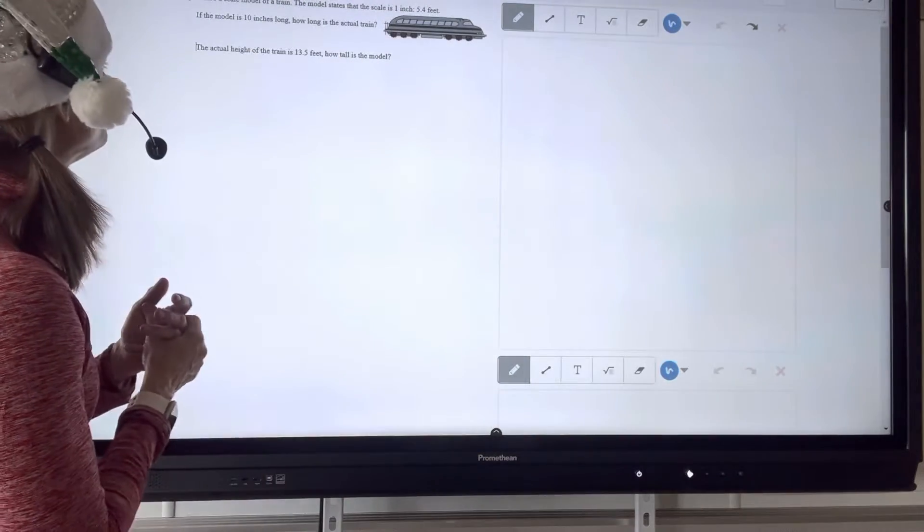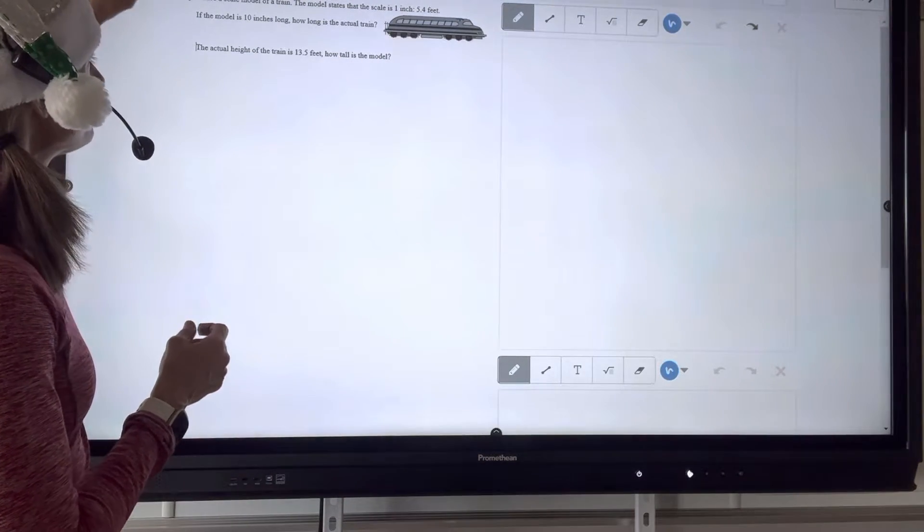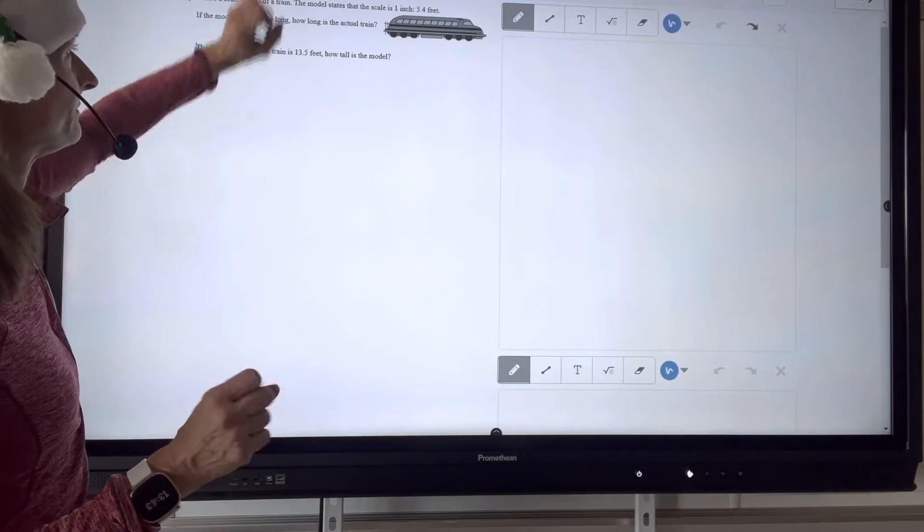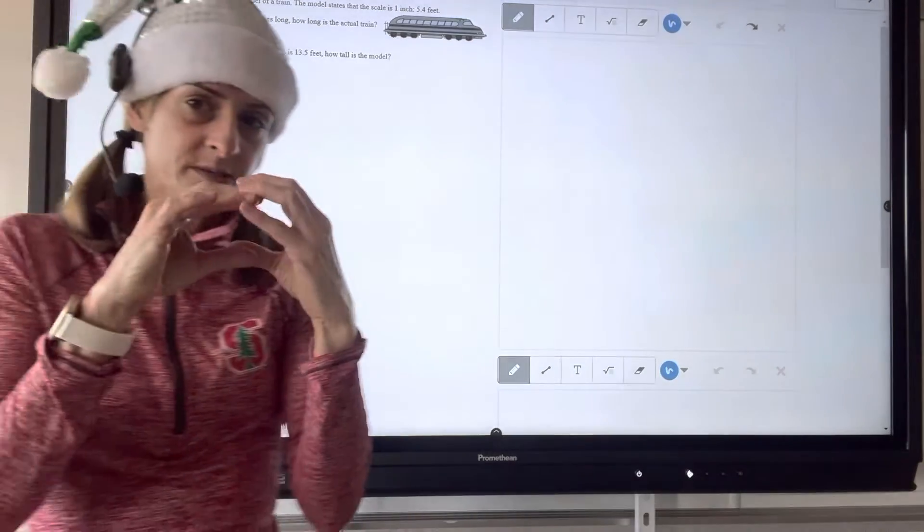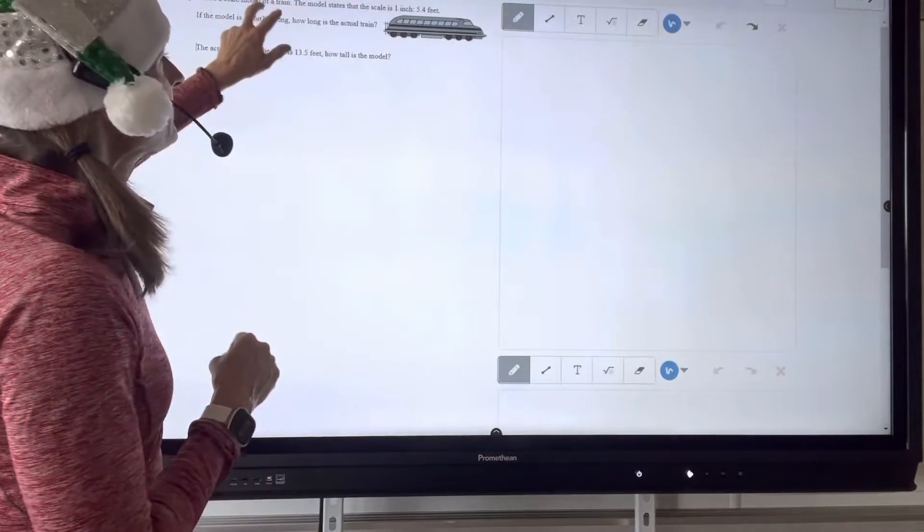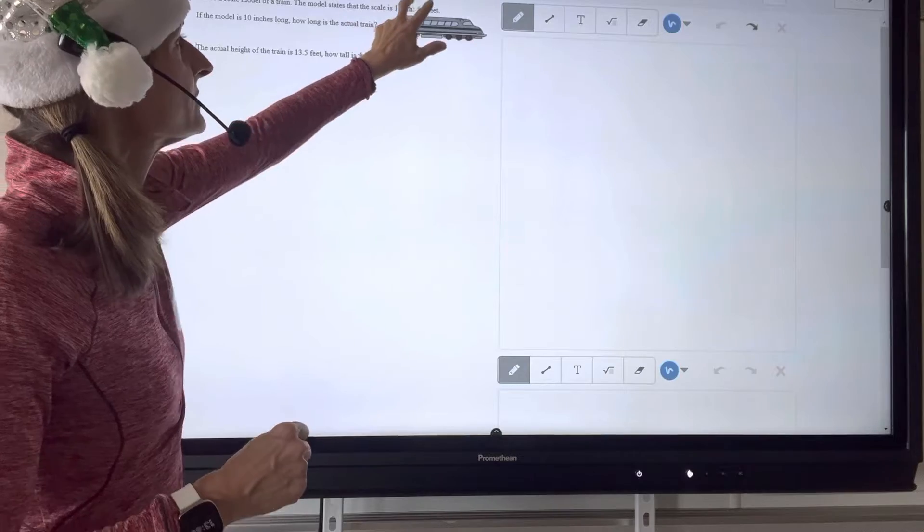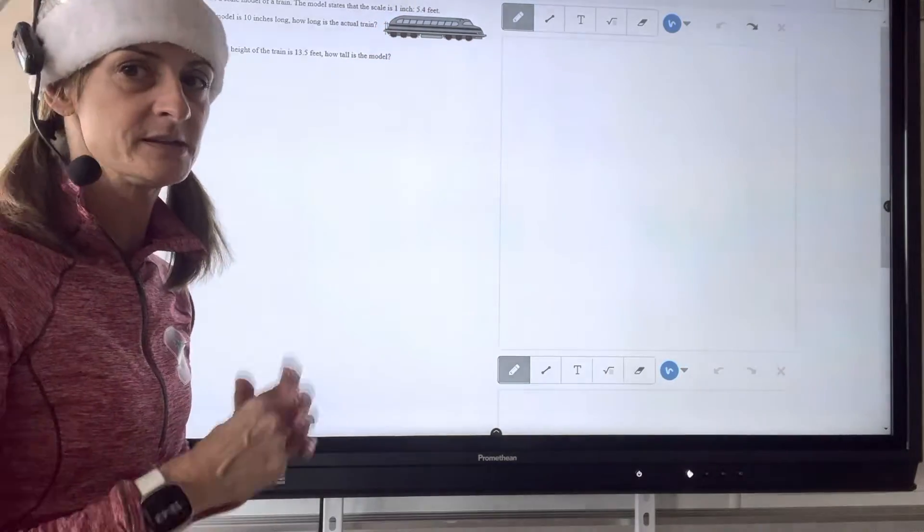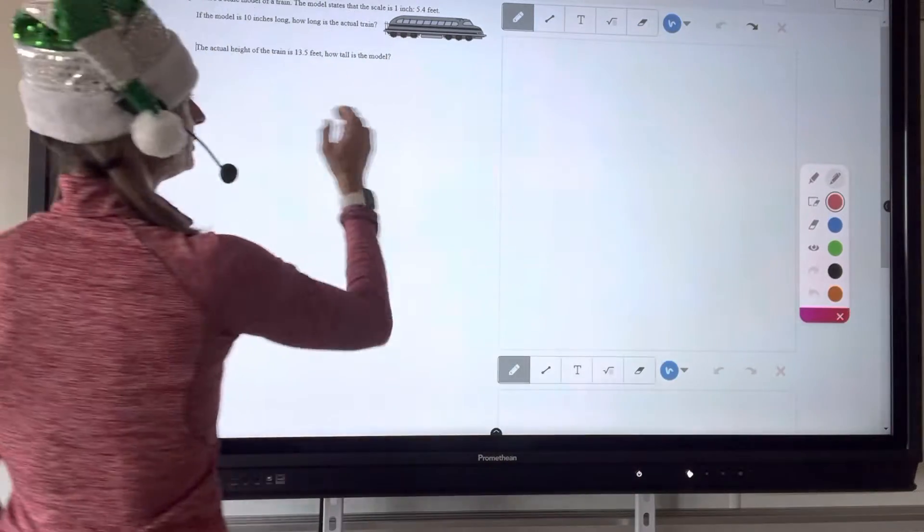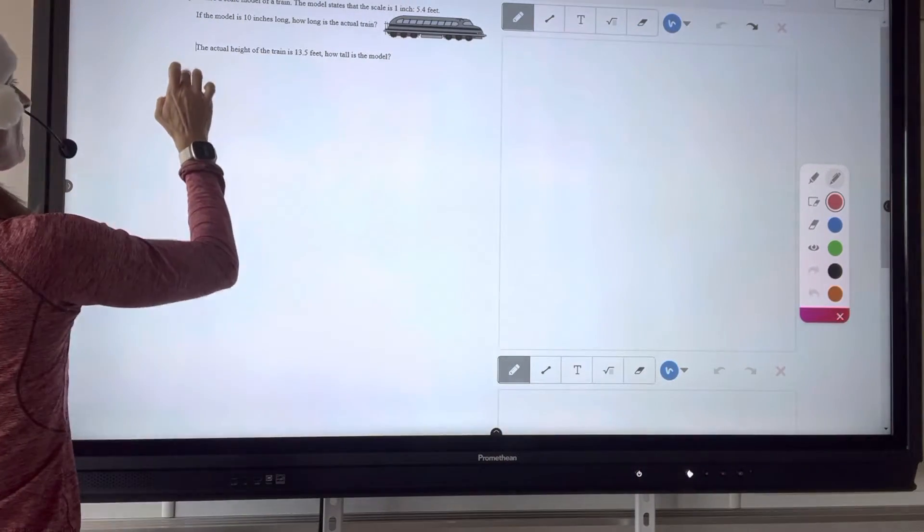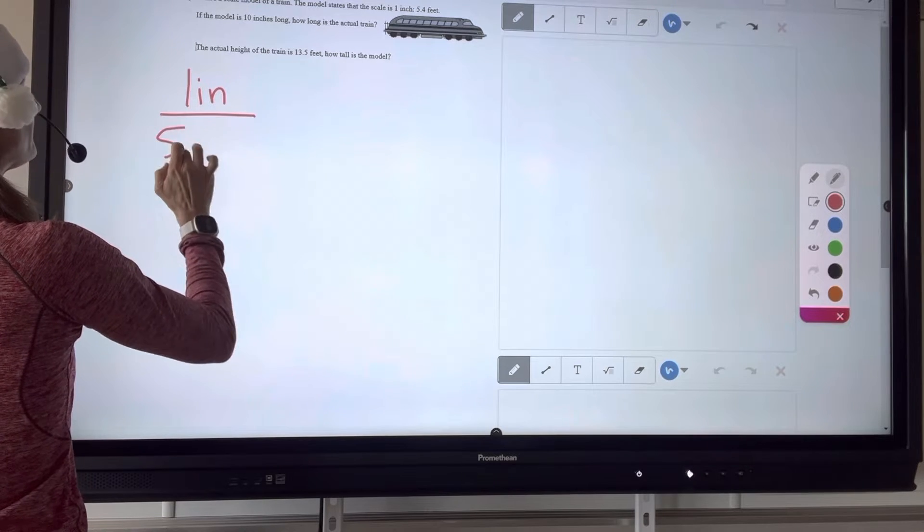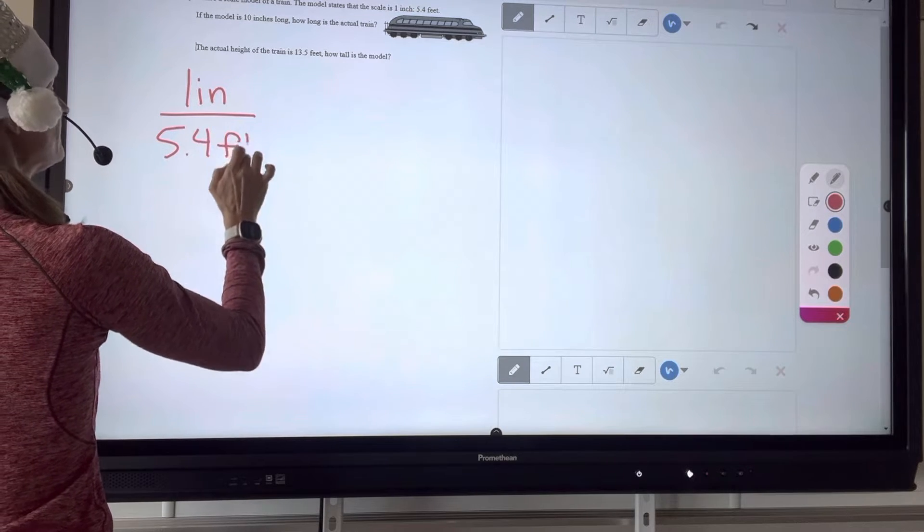And they tell you that you purchase a scale model of a train. So you've got this little small model of a train. The model states that the scale is one inch for every 5.4 feet. So I'm going to go ahead and start by writing that down. That's a ratio. One inch in the model is to 5.4 feet in real life and for realsies.